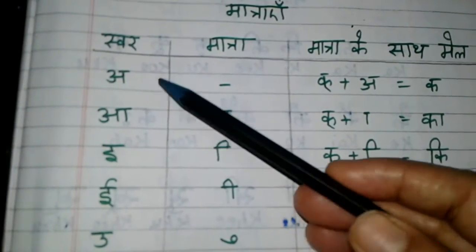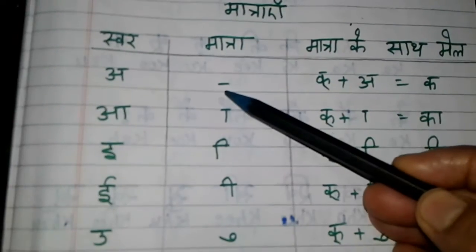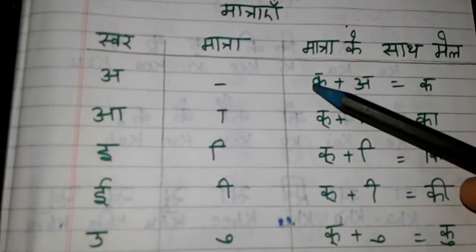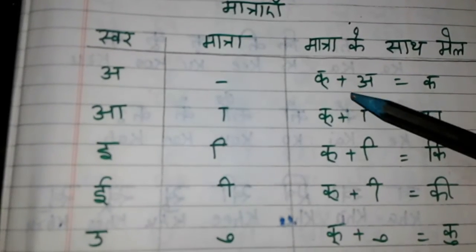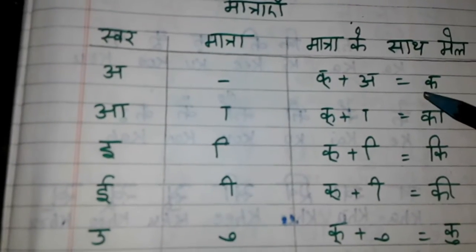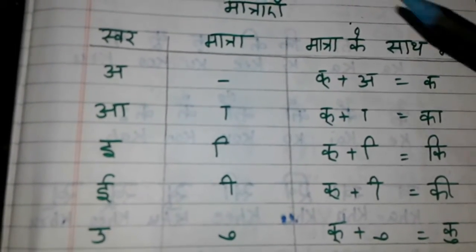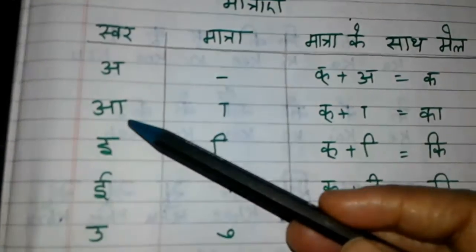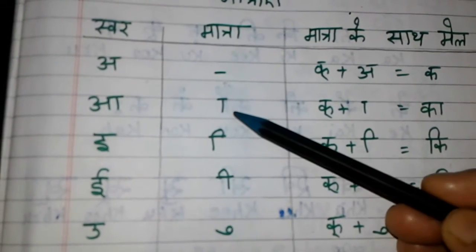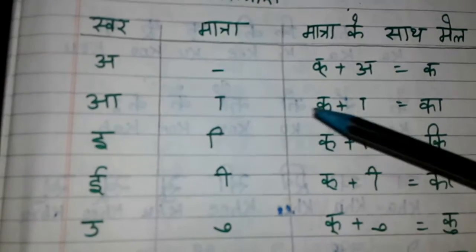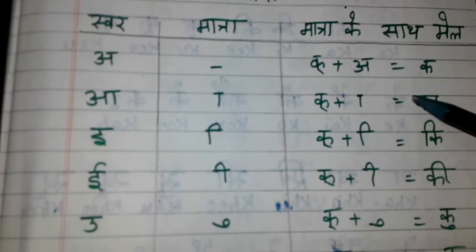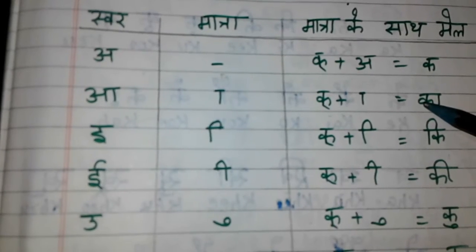For 'a' there is no matra. Example: k plus a = ka. For 'aa' matra: k plus aa matra = ka.